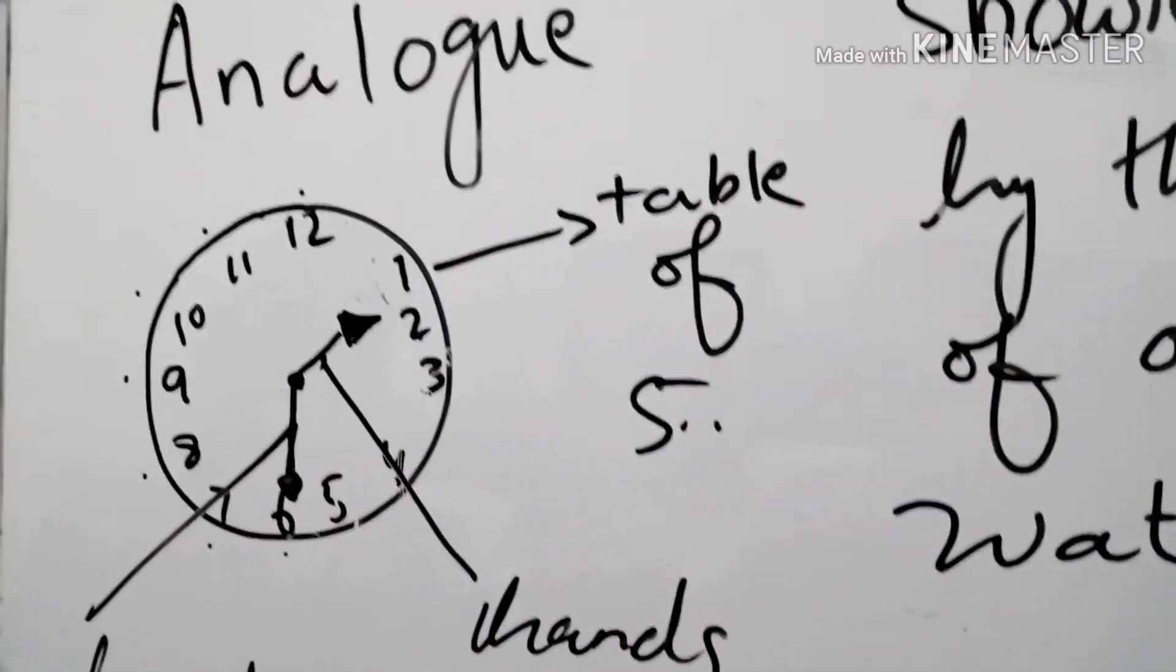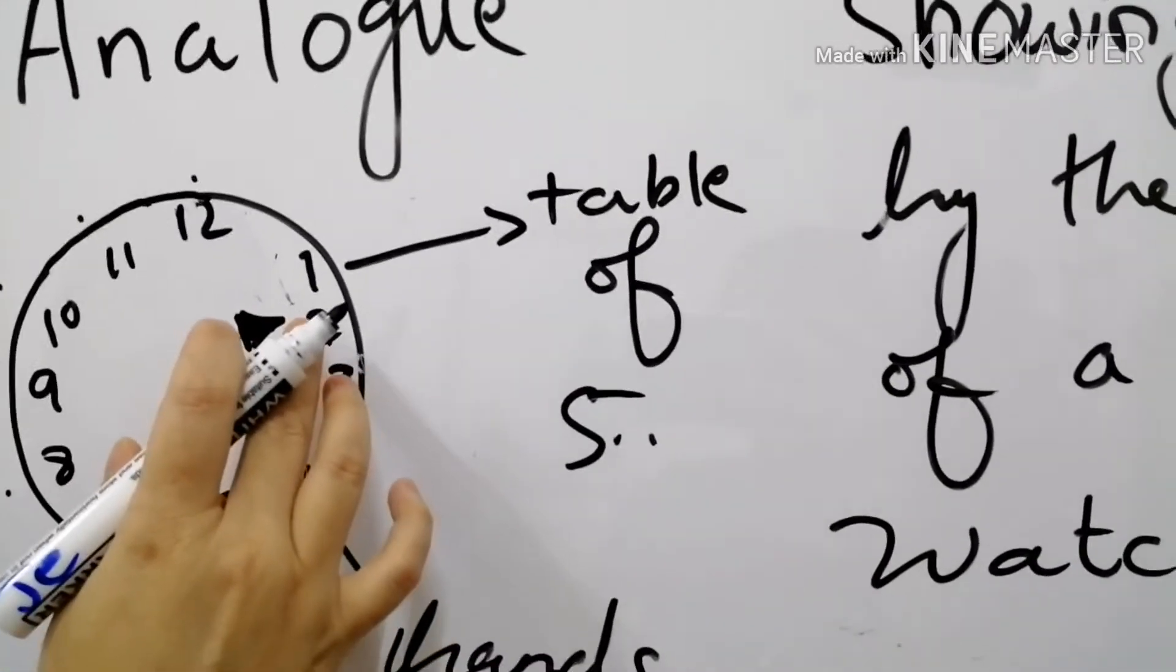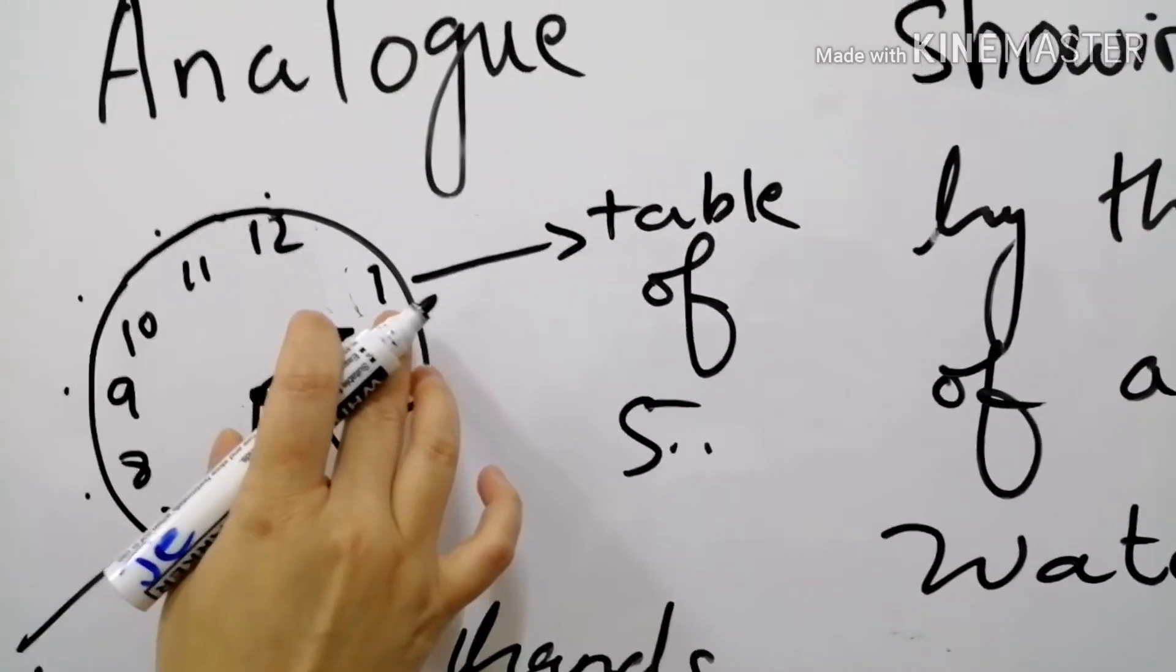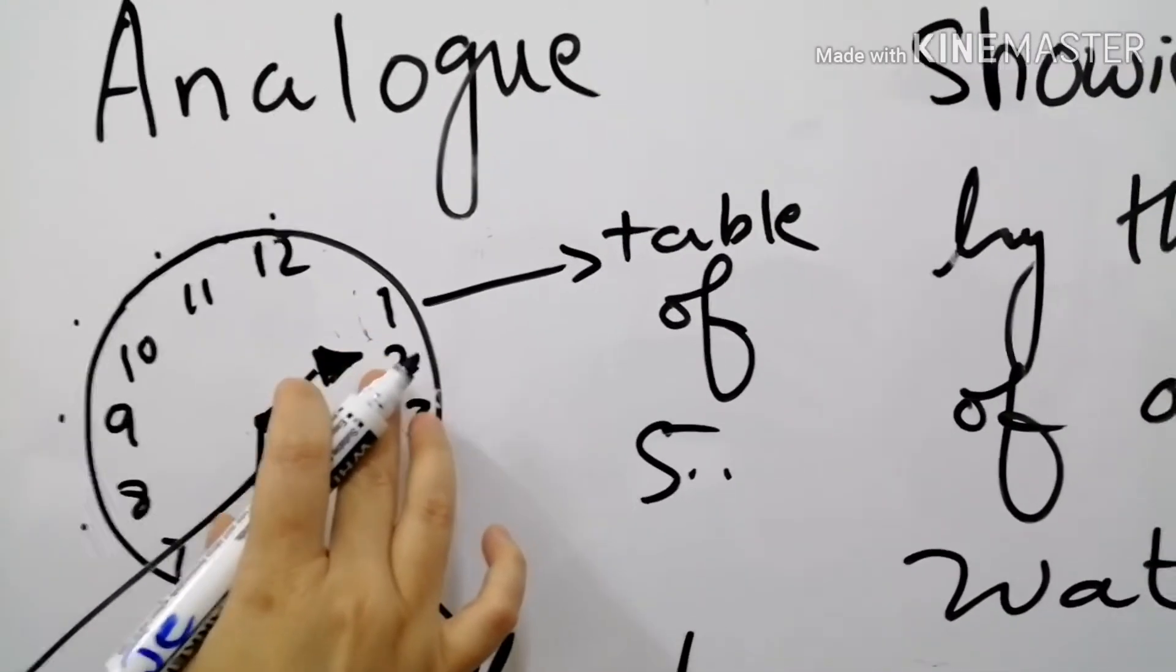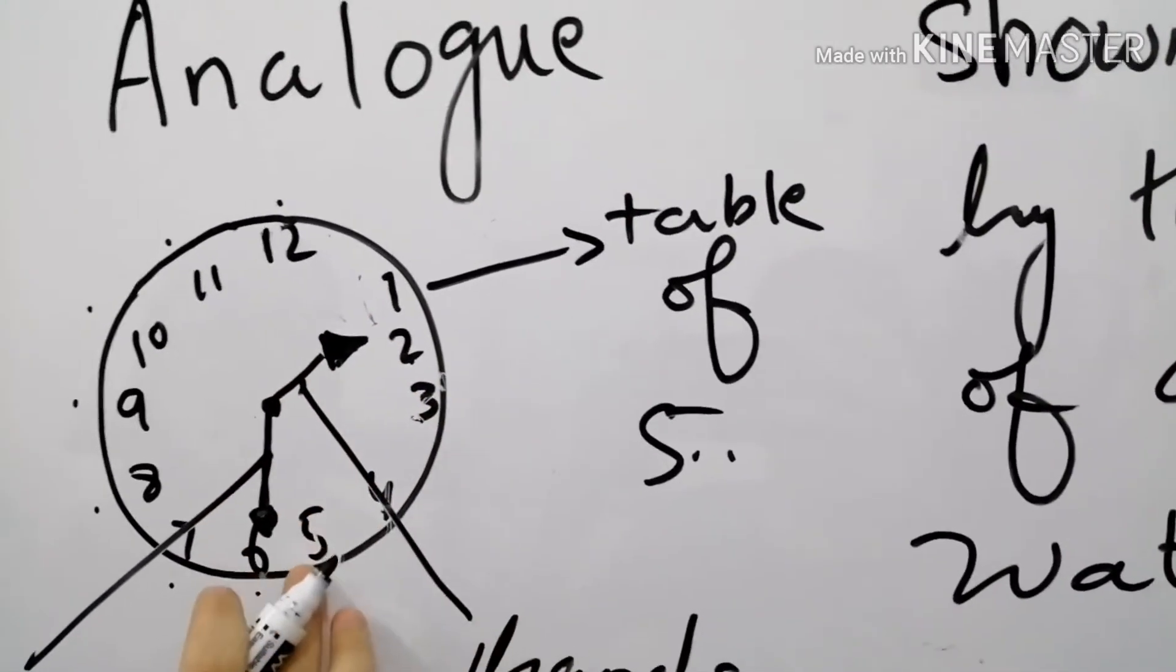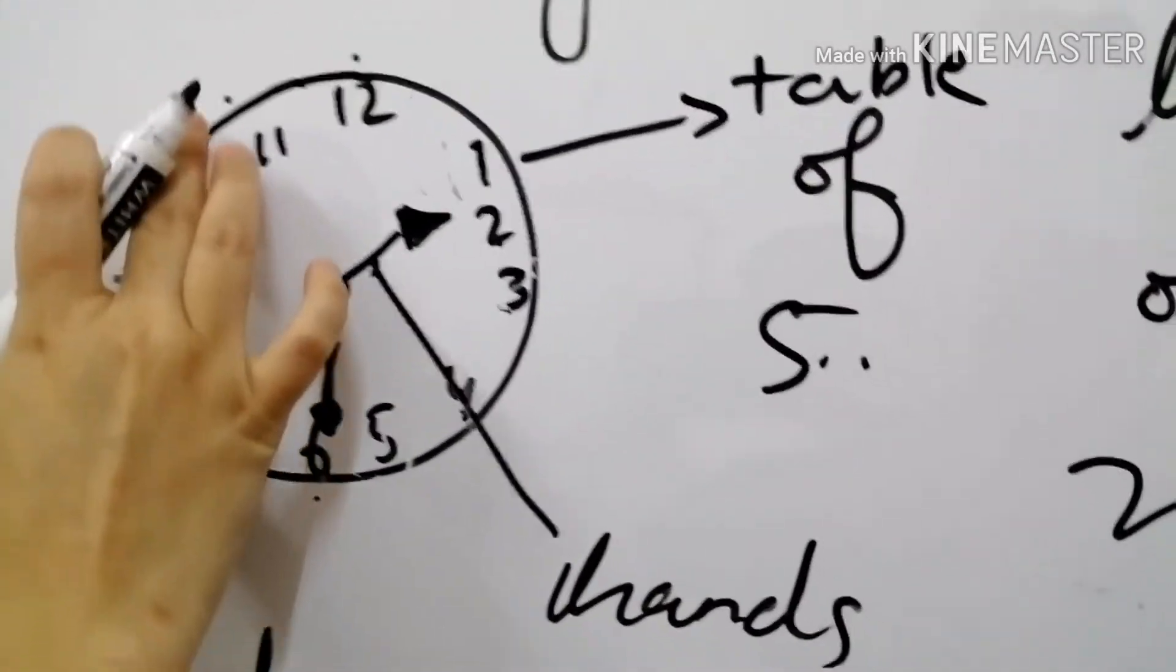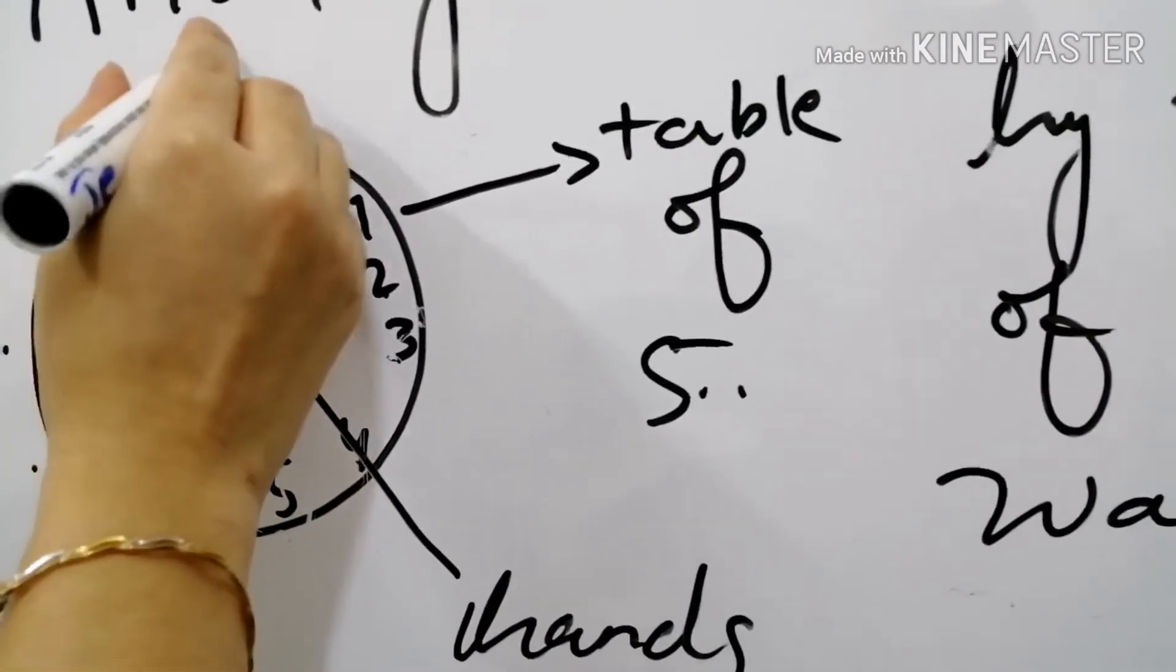Keep it in your mind that whenever we see the time we will need to keep the table of 5 in our mind. 5, 10, 15, 20, 25, 30, 35, 40, 45, 50, 55 and this is 60.